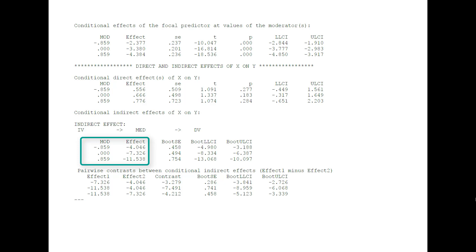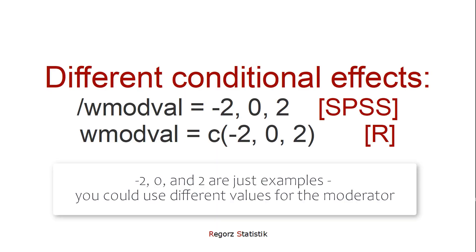Here we can see that for higher values of the moderator, our indirect effect gets smaller in the sense of more negative. However, the opposite is not true for those contrasts: even if all three contrasts were not significant, it would still be possible that we had a moderated mediation, because here we compare only three different levels of the moderator, but maybe for other levels we would get a significant difference. Hayes points out in his book that running process with the syntax, you could choose different moderator values to compare your indirect effects. With an additional parameter, we could tell process for which values of the moderator we want to get our conditional indirect effects and thereby our contrasts. So you could try out different values — different from minus 1 SD, mean, and plus 1 SD.